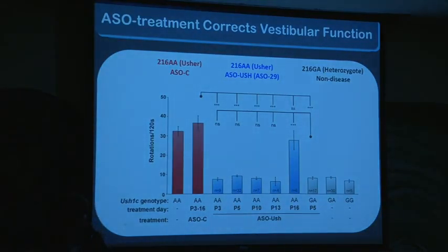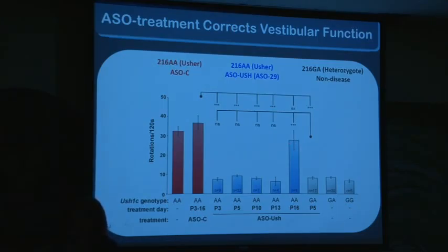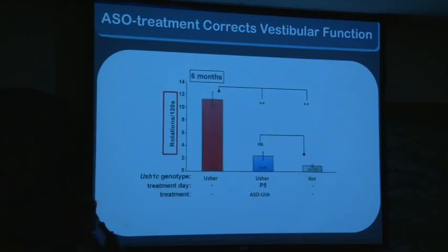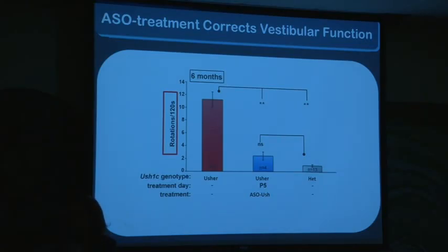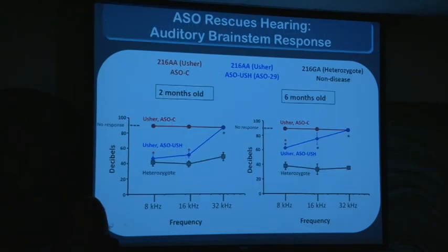We did a lot of quantitation of this, measuring rotations at different time points. Even injecting at P13 after birth allowed rescue of the vestibular defect, but treating later at P16 did not. So there's a clear window of opportunity for vestibular function. At six months and now up to nine months to a year, the treated mice never circle and pass swim tests — we're pretty confident we've effectively cured the vestibular dysfunction in these mice with a single treatment at P5.